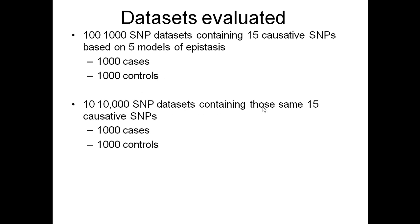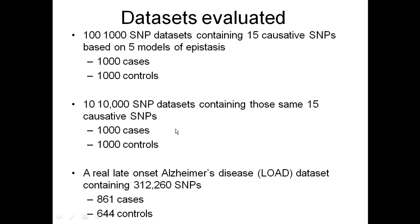We also looked at 10,000 SNP datasets containing those same 15 causative SNPs — two three-SNP interactions, one four-SNP, and a five-SNP interaction adding up to 15 SNPs — with 1,000 cases and 1,000 controls. These are both simulated datasets. Then we looked at a real late-onset Alzheimer's disease LOAD dataset containing about 300,000 SNPs, with 861 cases and 644 controls. This is a real dataset, not simulated, so there's no injection of epistatic interactions — we don't know what the interactions are, and we want to find them and use them to do prediction.